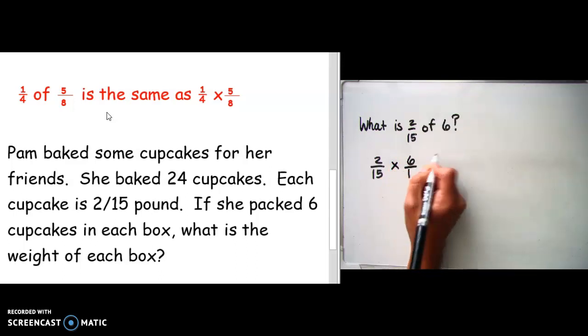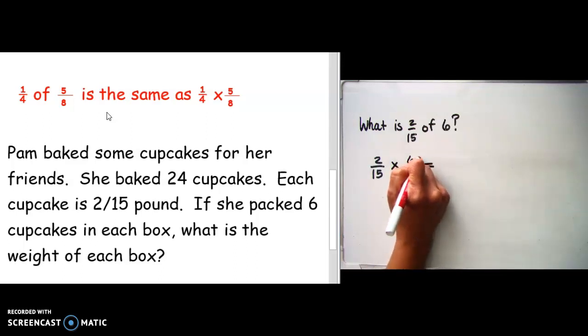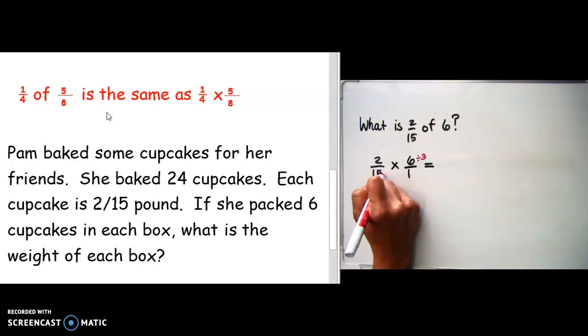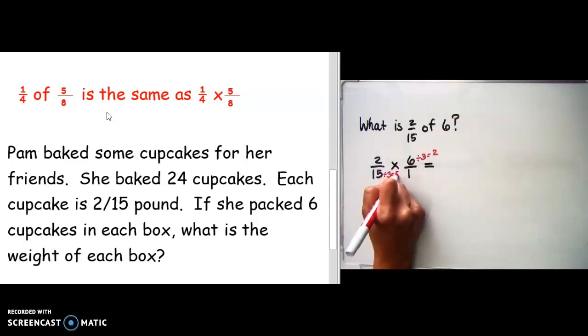I'm going to write it over one, six over one. I'm going to see if I can divide. I can divide six by three and fifteen by three. Six divided by three is two, and fifteen divided by three is five.